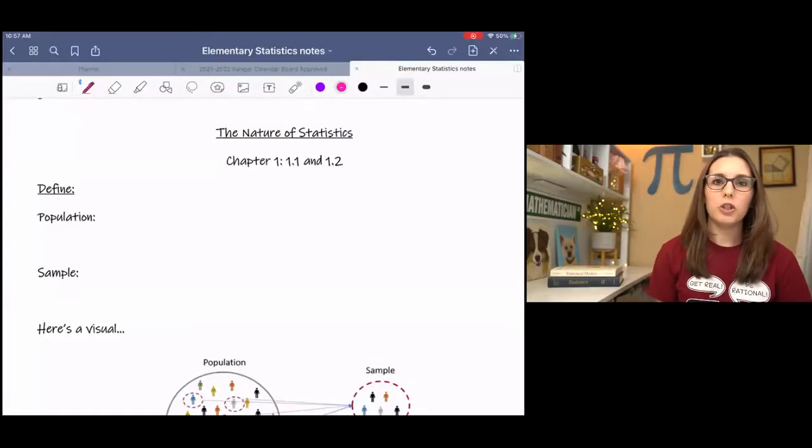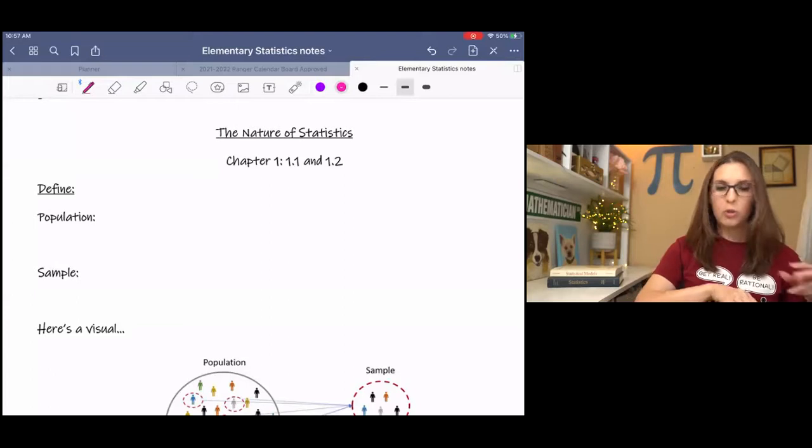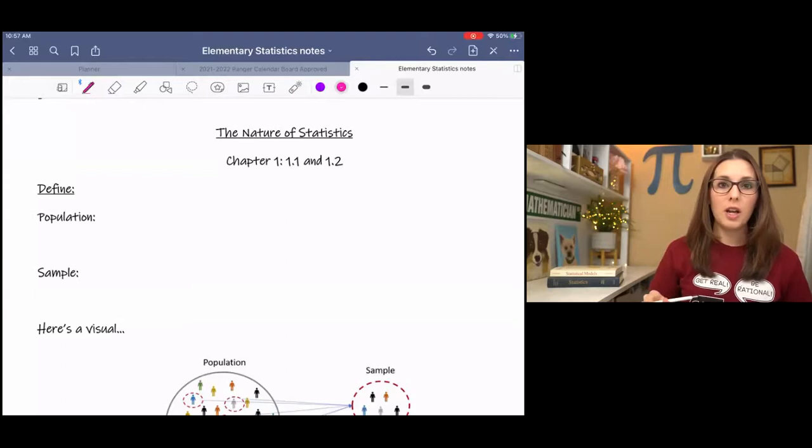Hi, this lesson is on the nature of statistics, and basically we'll be going through some common terms that you're going to be hearing throughout statistics that you'll need to be really familiar with. It might be helpful to you as you learn these to grab your textbook and maybe fill these out ahead of time. Use your textbook to go through these definitions and fill them out. If you don't have your textbook, then just follow along. So one of the two of the main words that you're going to hear over and over and over again through every chapter of statistics or every unit of statistics is population and sample.